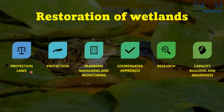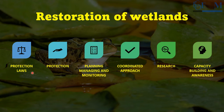Several legislations have relevance to wetland conservation, including the Forest Act 1927, Forest Conservation Act 1980, Wildlife Protection Act 1972, Air Pollution Prevention and Control of Pollution Act 1974, Water Cess Act 1977, the umbrella Environmental Protection Act 1986, Coastal Regulation Zone Notification 1991, the Biodiversity Act 2002, and Biodiversity Rules 2004 — aimed at safeguarding floral and faunal diversity and regulating their flow from India for research and commercial use.